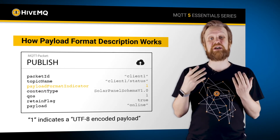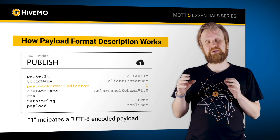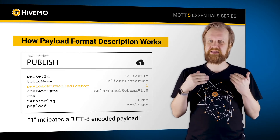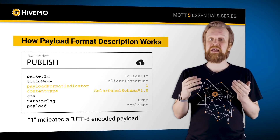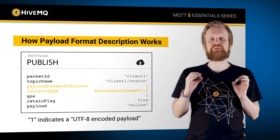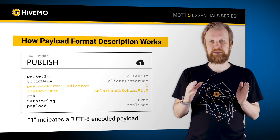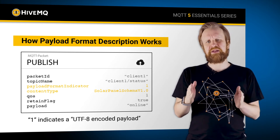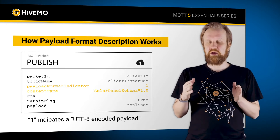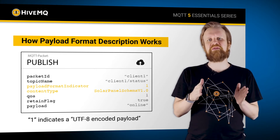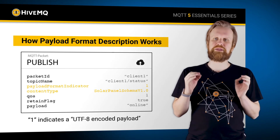In the case of byte 1, so a UTF-8 encoded payload, the second attribute — which is the content type — can be used as an arbitrary string descriptor of what the UTF payload exactly is. You can think of it similarly to the MIME types that are known from HTTP. There is no defined table of what means what, so every user can use their own descriptions.